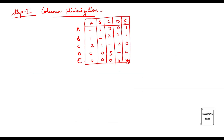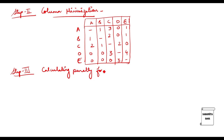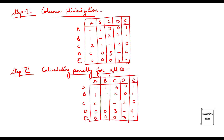Since there is now at least one zero in each row and column, I will go for step three: calculation of penalty for all zeros. For each zero, we check which row and column it lies in and find the minimum value apart from that zero in its row and column, then sum them. The first zero is in row one, column four. Apart from the zero, the minimum in the row is one and in the column is zero, giving a penalty of one.